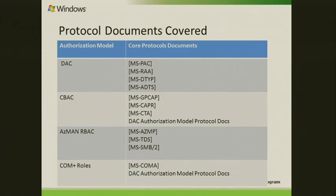There is a protocol called CAPR — the Central Access Policy Identifier Retrieval protocol. This is basically for a file server administrator who wants to know what central access policies are pushed onto the file server. The file server administrator can use the FSRM interface, which provides a way to configure the policies. For example, if a file server has ten central access policies pushed onto it, the file server administrator can choose which policies to apply to the file server.